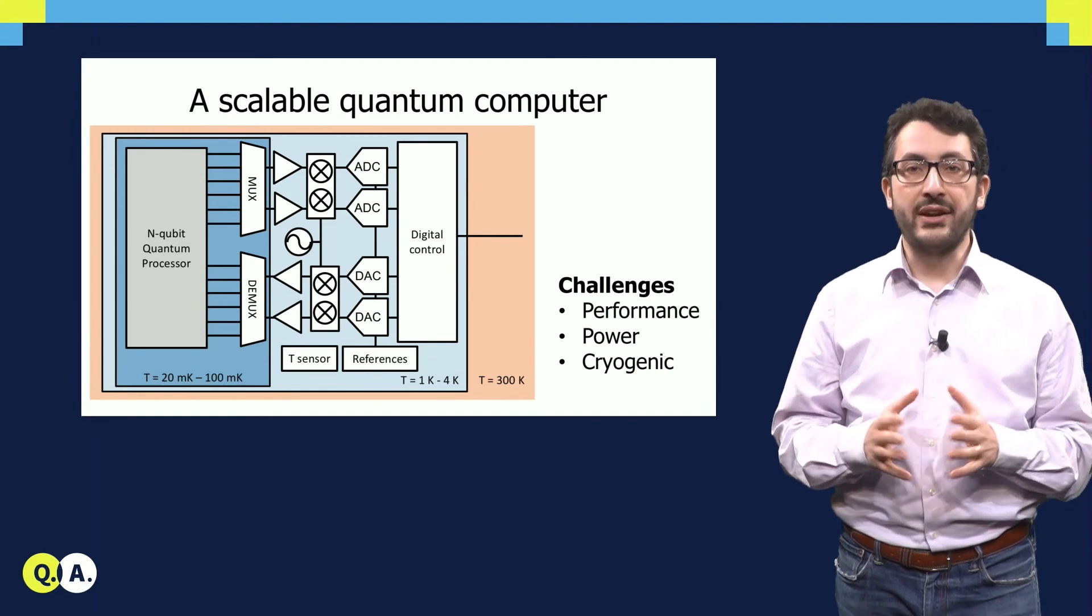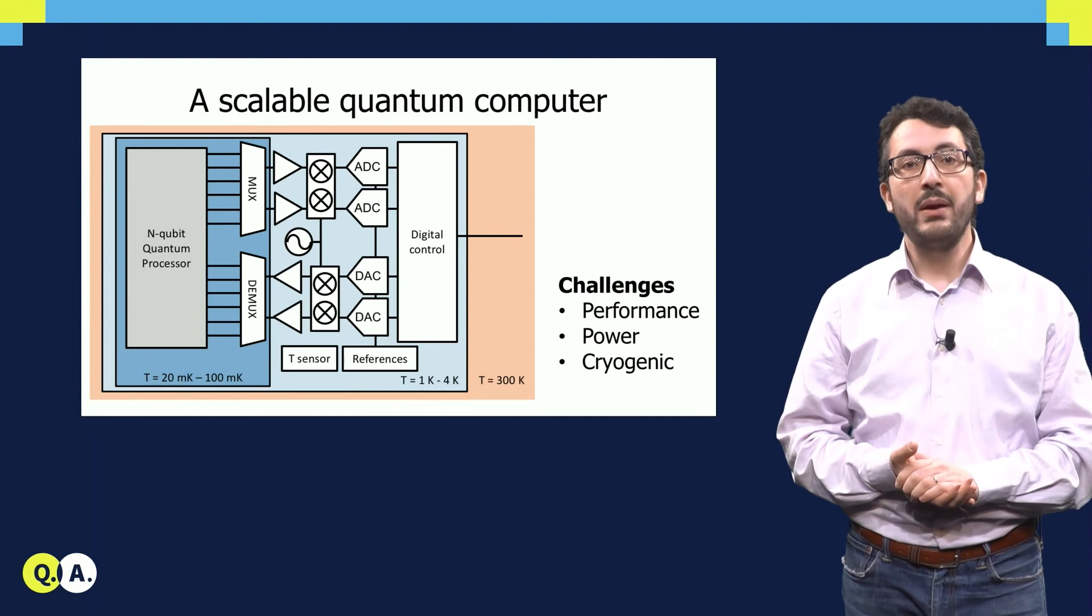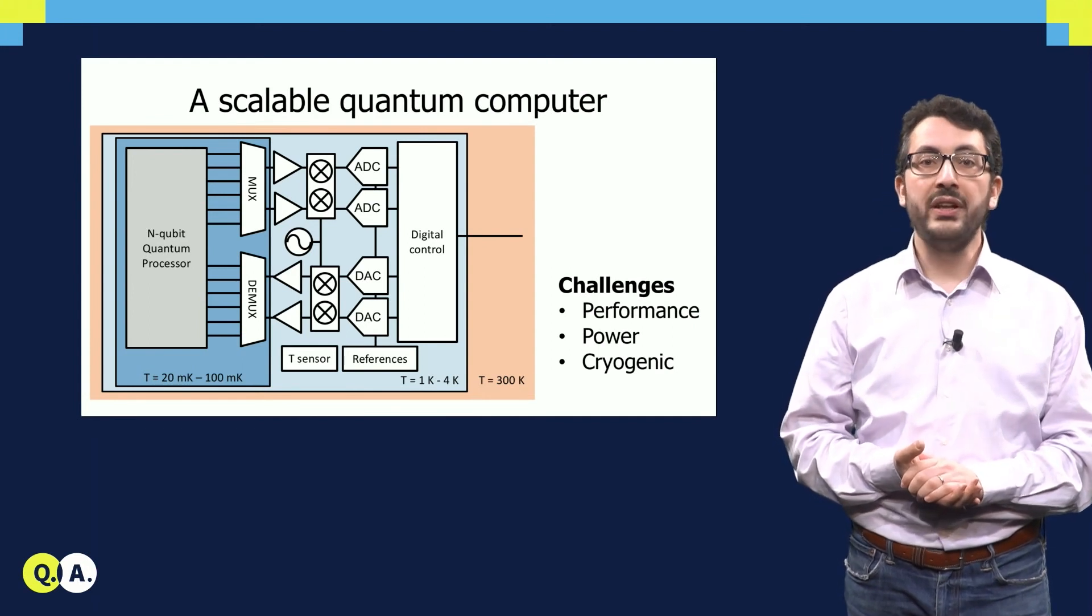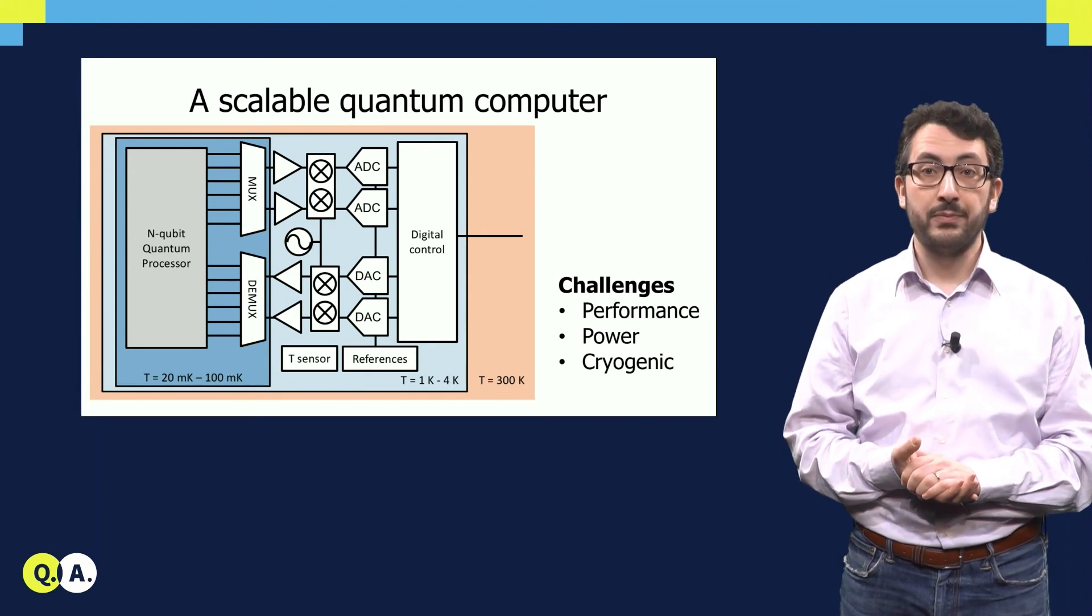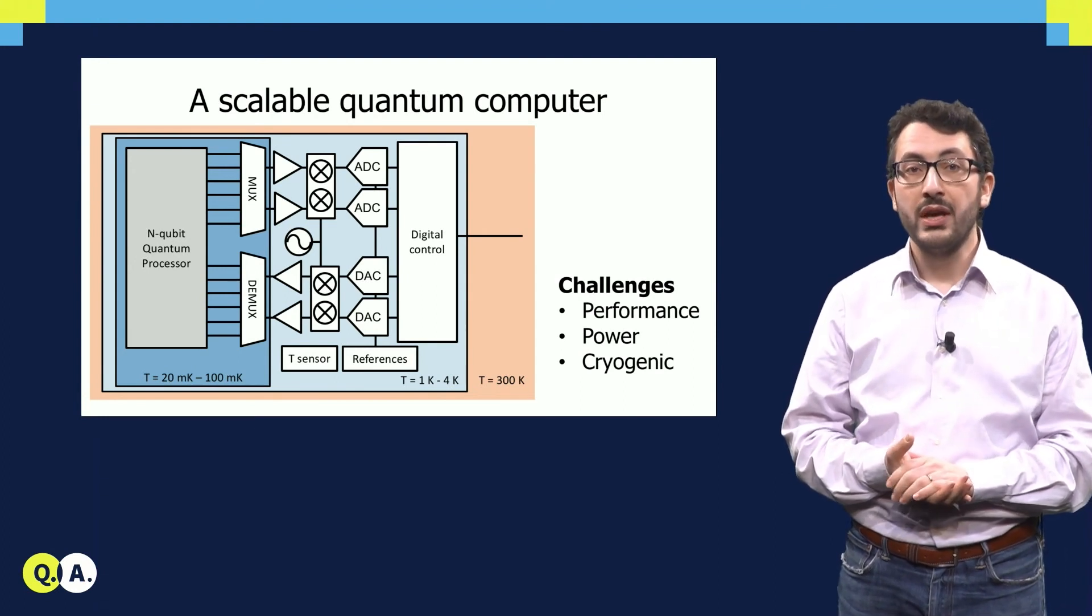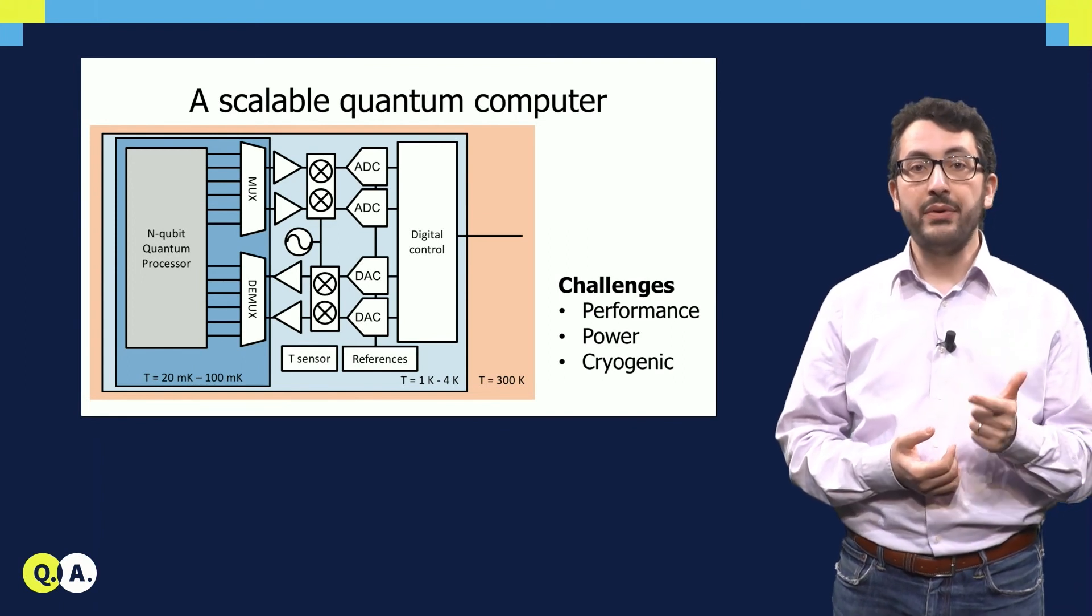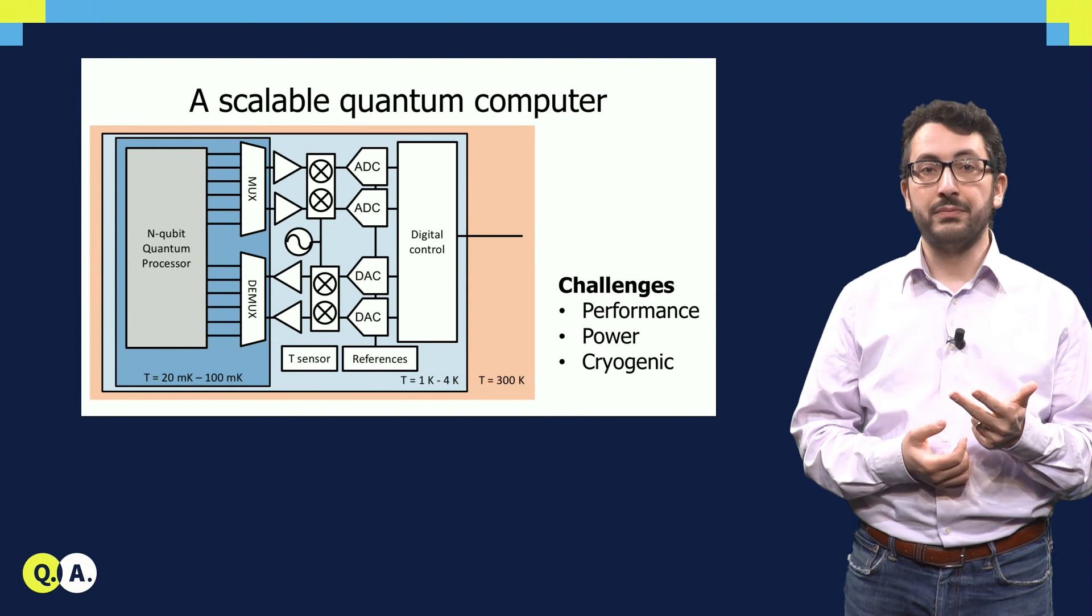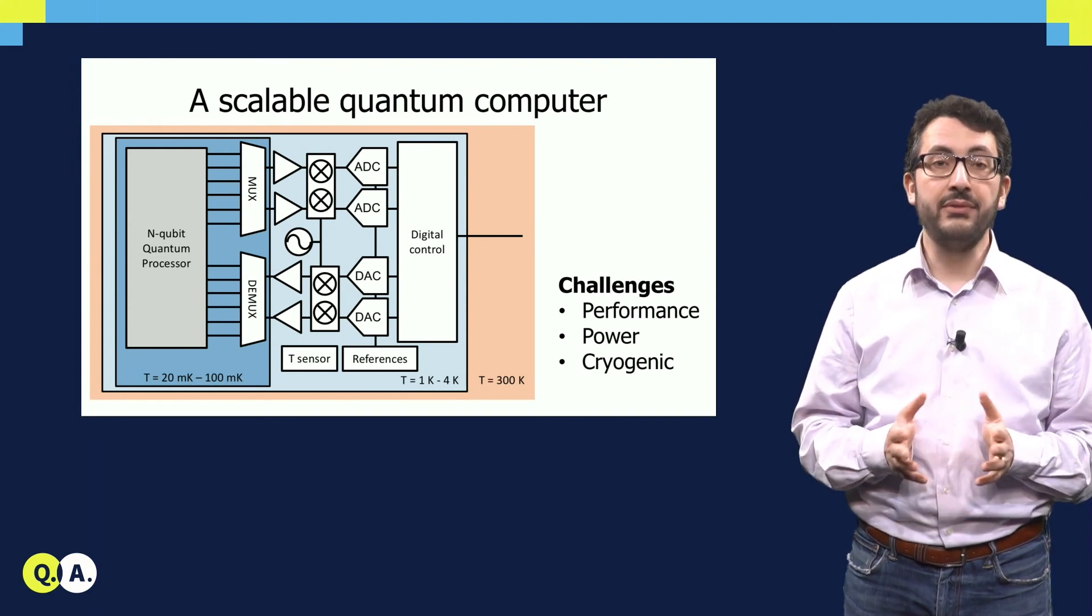So to conclude this lecture, we have seen that we can build a scalable quantum computer if we can build an electronic interface operating at cryogenic temperatures, very close to the quantum processor. However, to make sure that this works, we have to address a number of challenges in terms of performance, power dissipation and cryogenic operation. And these are the topics that we are going to discuss in the following video. Thank you.